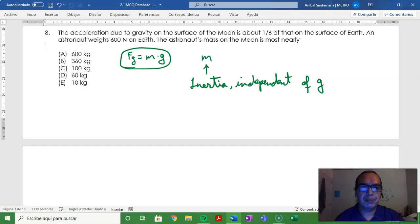Therefore, if it's independent of g, it is the same regardless of the fact that the Moon has a different gravity. So you have exactly the same amount of kilograms.